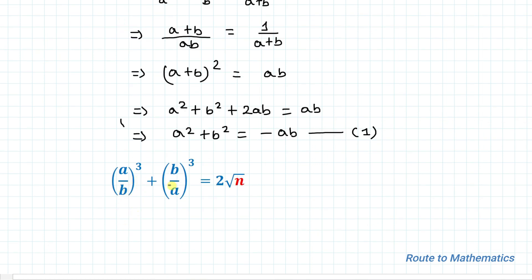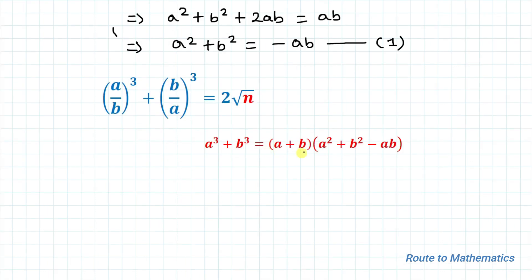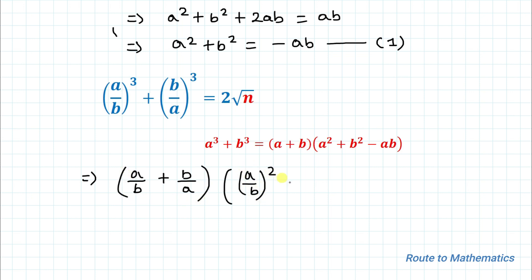Now I copy the second equation: (a/b)³ + (b/a)³ = 2√n. Here I apply the algebraic identity a³ + b³ = (a + b)(a² + b² - ab), treating x = a/b and y = b/a, giving (a/b + b/a) multiplied by ((a/b)² + (b/a)² - (a/b)(b/a)) = 2√n.